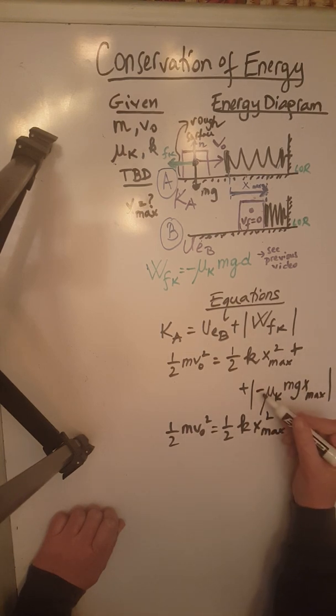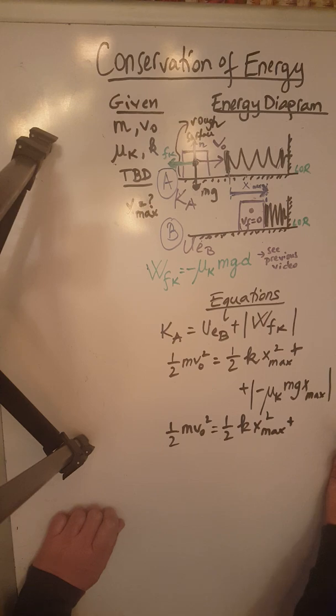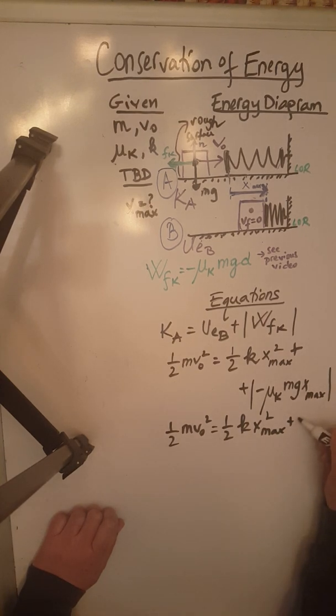plus, the absolute value will get rid of the negative here, and we'll have left mu K M G x max.